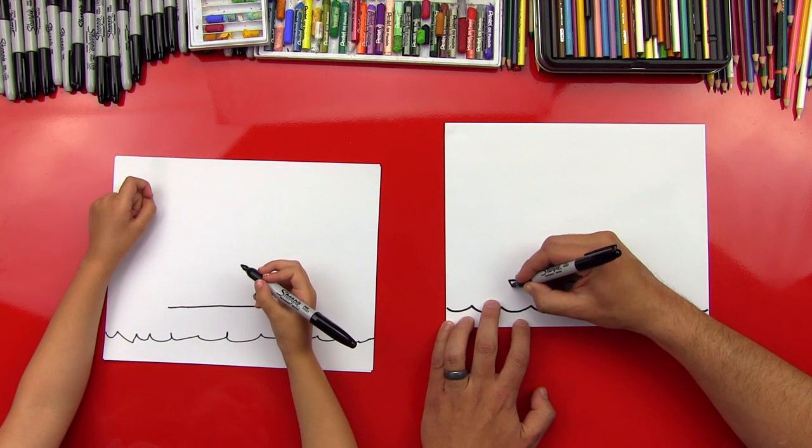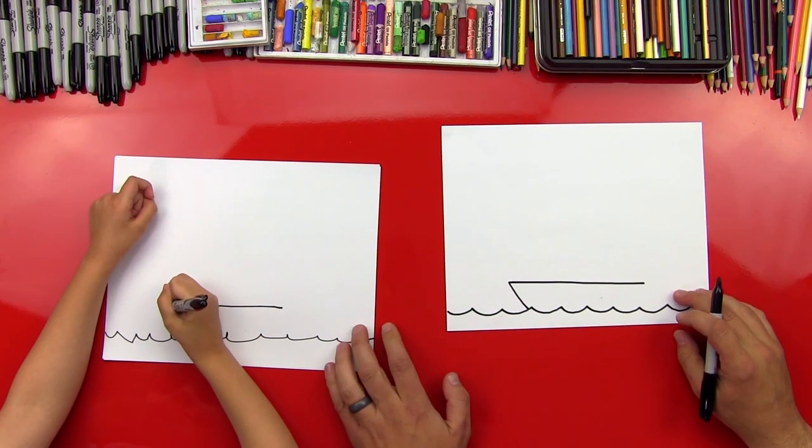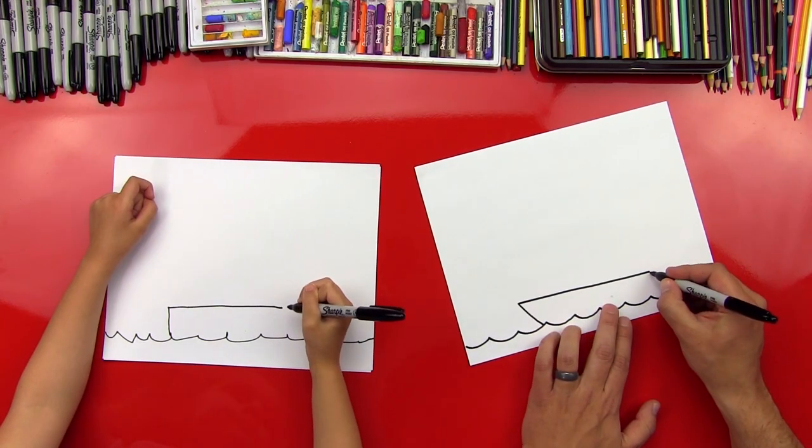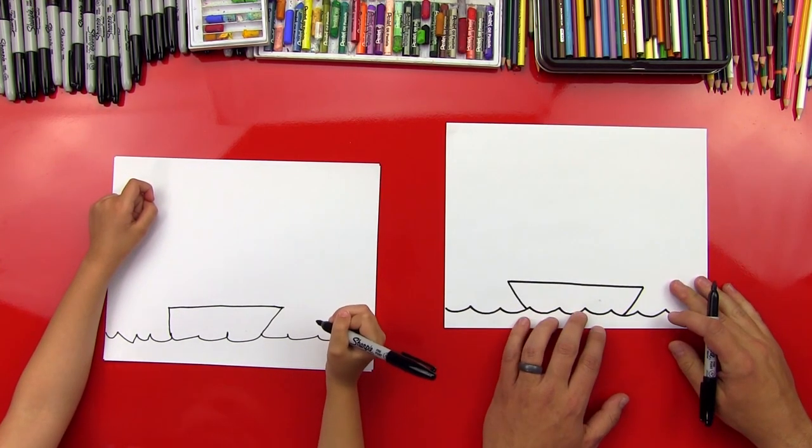Okay, let's draw the bottom of the boat. We're going to draw a line that comes in, connects to the water. Good. And then we're going to draw another line on this side that connects to the water over here. Perfect, Hads.